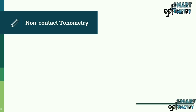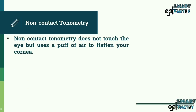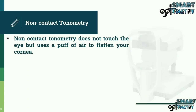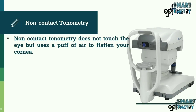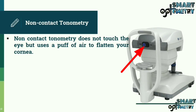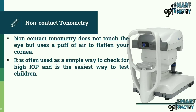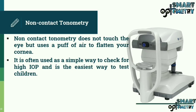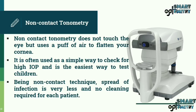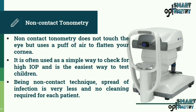Non-Contact Tonometry does not touch the eye but uses a puff of air to flatten the cornea. It is often used as a simple way to check for high IOP and is the easiest way to test children. Being a non-contact technique, the spread of infection is very low and no cleaning is required for each patient.